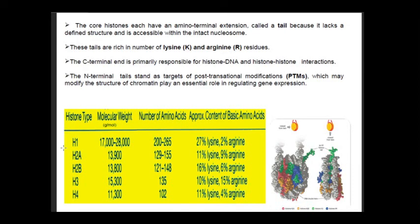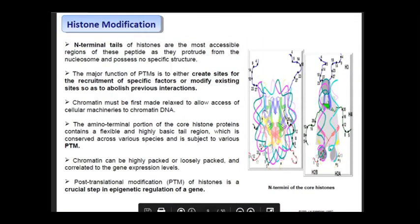Now the core histones each have an amino-terminal extension called N-terminal tails, because it lacks defined structure and is accessible within the intact nucleosome. These tails are rich in number of lysine and arginine residues. The C-terminal end is primarily responsible for histone-DNA and histone-histone interaction. The N-terminal tails stand as targets of post-translational modifications which may modify the structure of chromatin and play an essential role in regulation of gene expression.